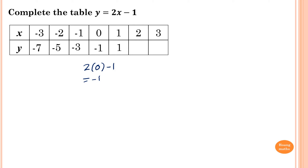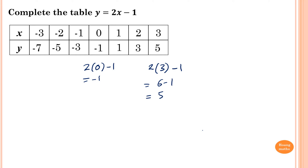And for the last one, when x is 3, so 2 lots of 3, and then minus 1. So 2 lots of 3 minus 1 — 2 times 3 is 6. 6 minus 1 is 5. So the answer is 5.